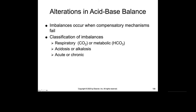Alterations in acid-base balance occur when the compensatory mechanisms fail — when the buffers aren't working, you're in renal failure, or you have significant damage to your lungs. We're going to have imbalances called respiratory or metabolic acidosis or alkalosis. The key questions are: is it caused in the respiratory or metabolic system, is it creating an acidotic or alkalotic situation, and is this acute or chronic?